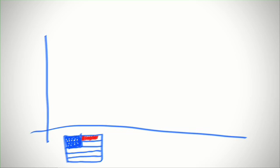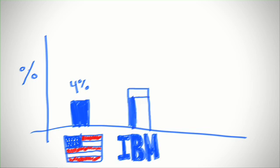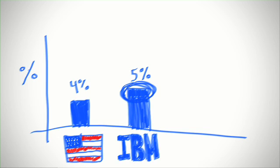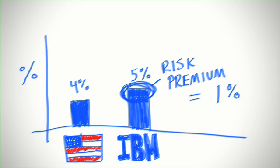But what if you loan money to someone who may default? If I require a 4% return from the government, I might require a 5% return from IBM. And that extra 1% is the risk premium. It's the extra compensation you require to take on risk.